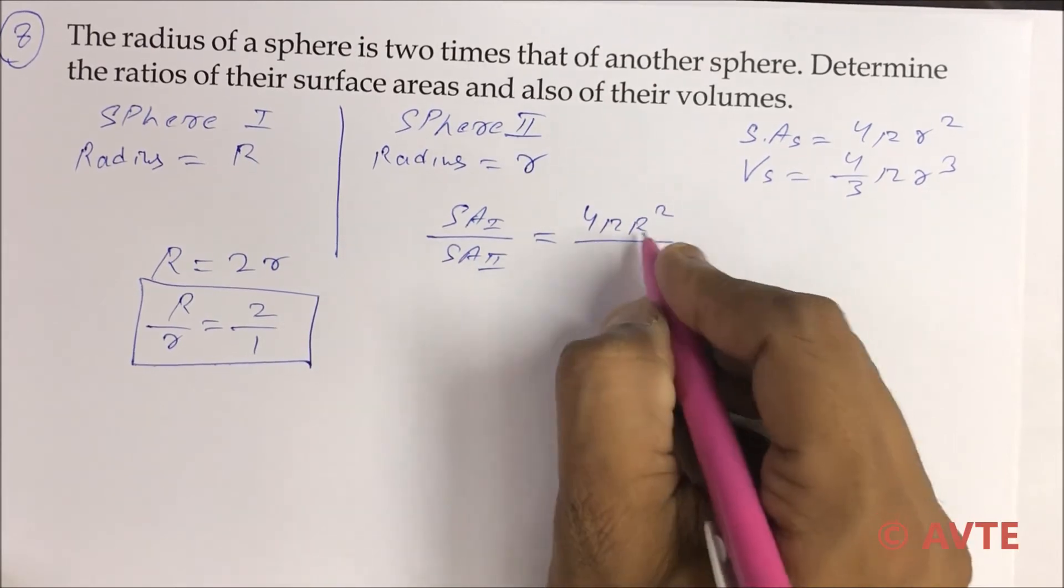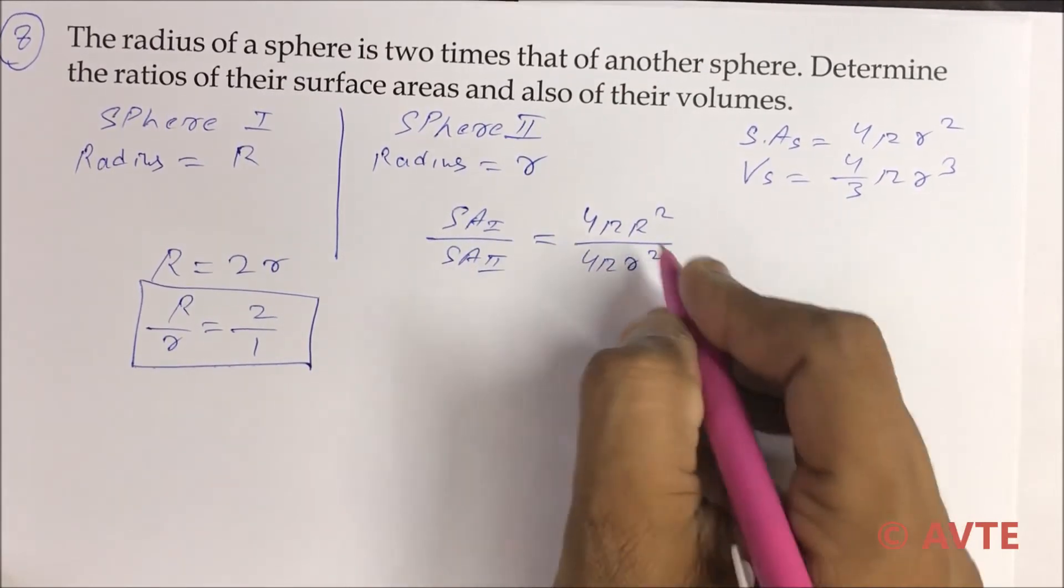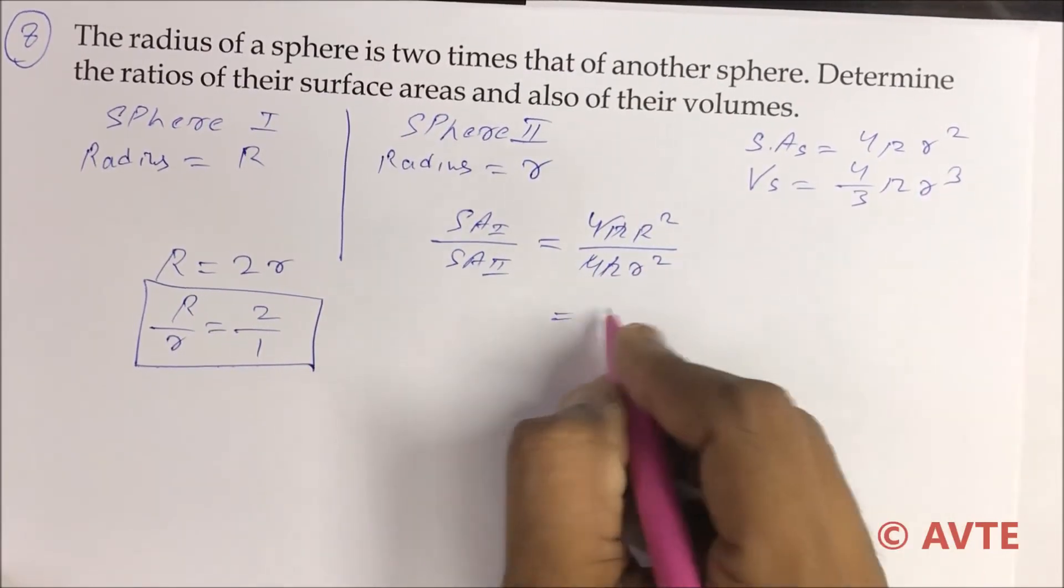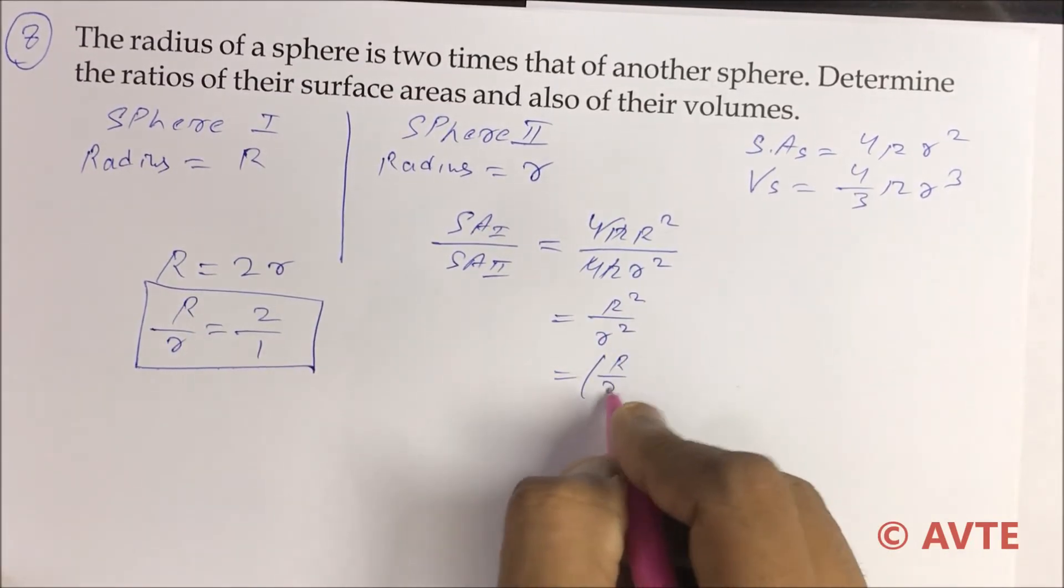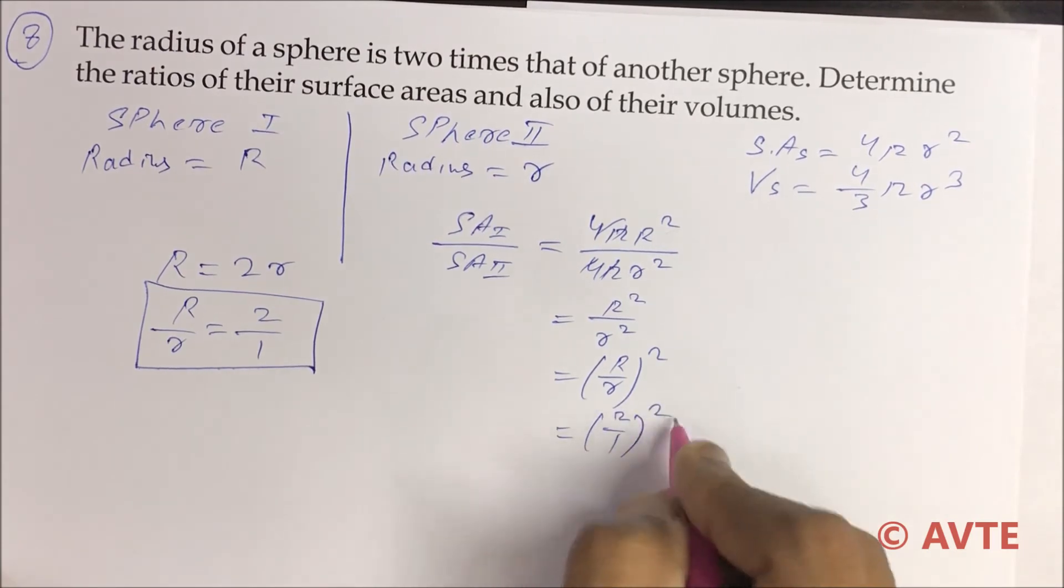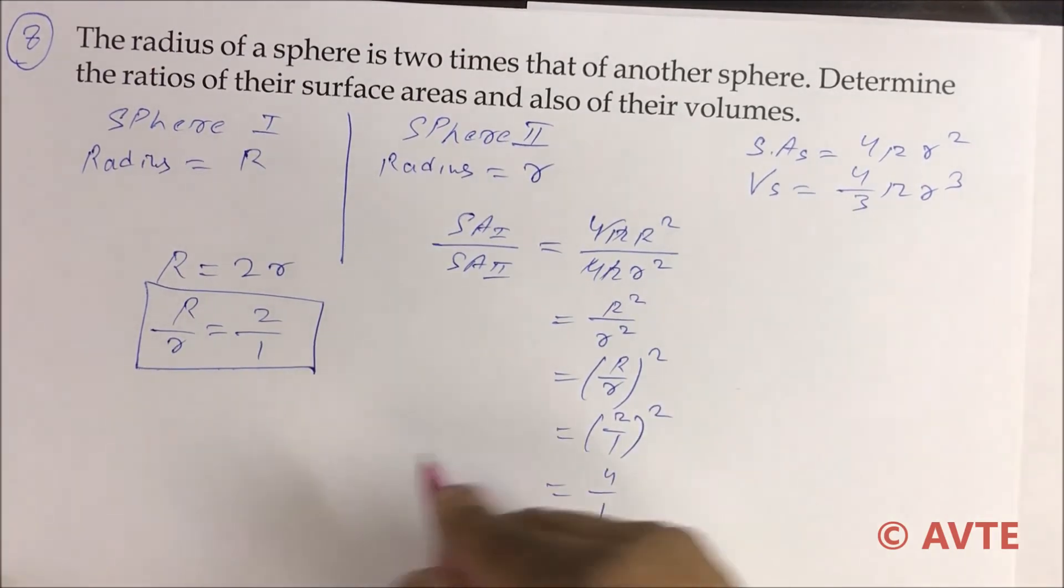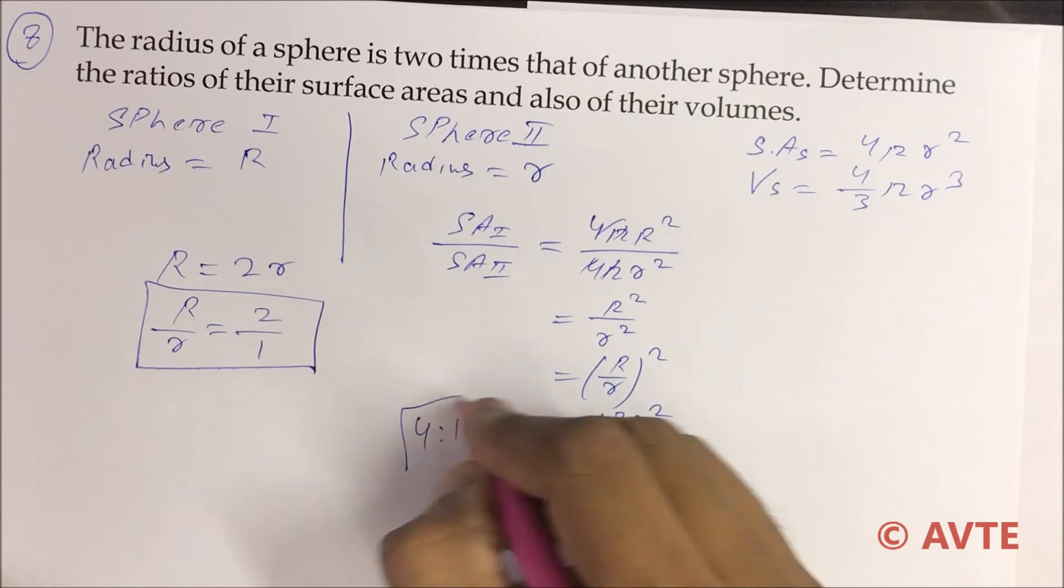4 pi R squared upon 4 pi r squared, that is R squared by r squared. That is R by r whole squared. That is 2 by 1 whole squared. That is 4 by 1, and the ratio is 4 is to 1.